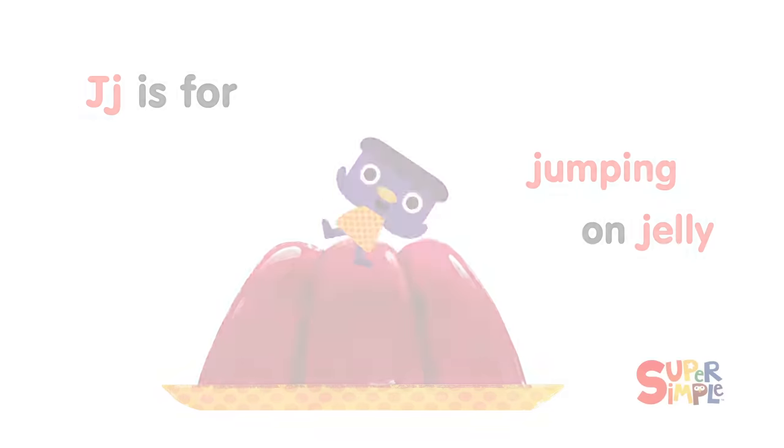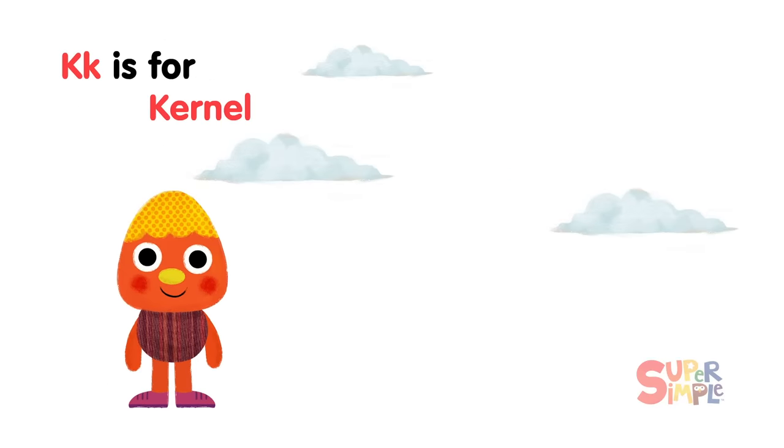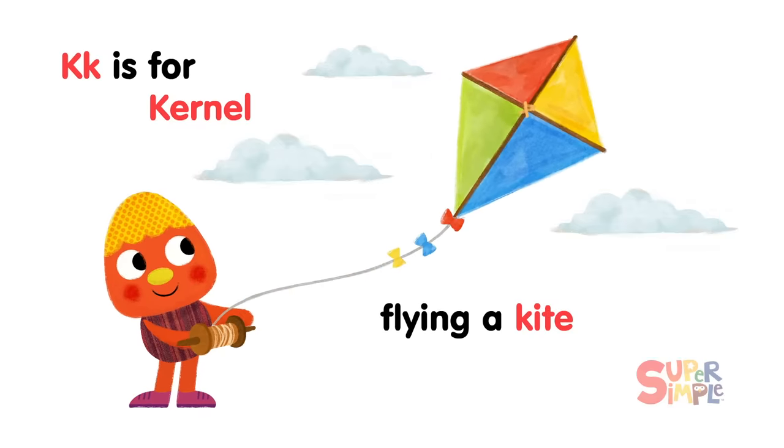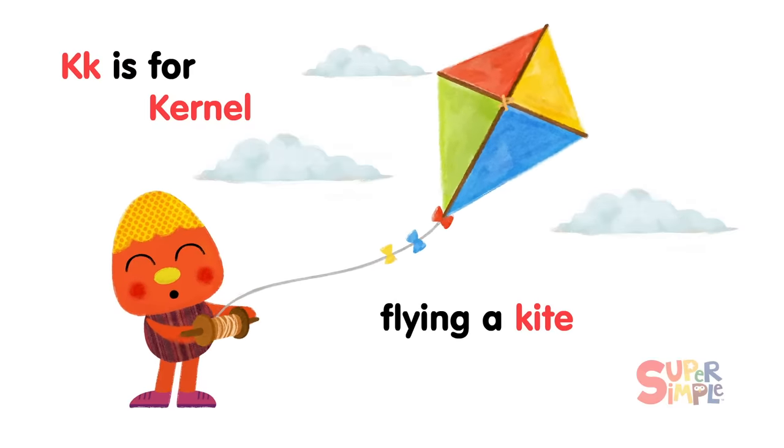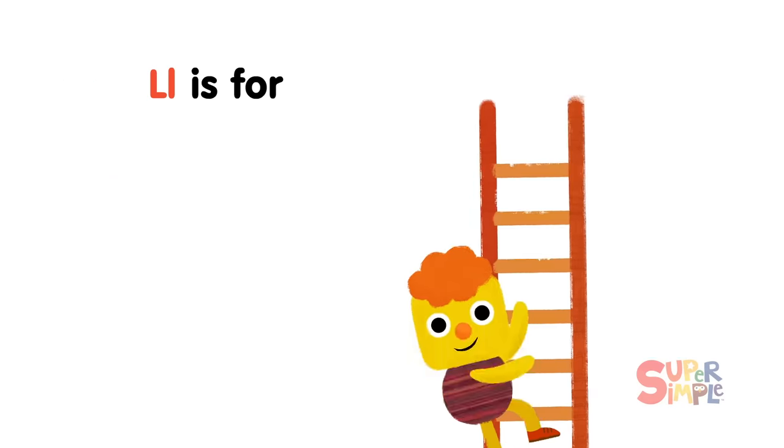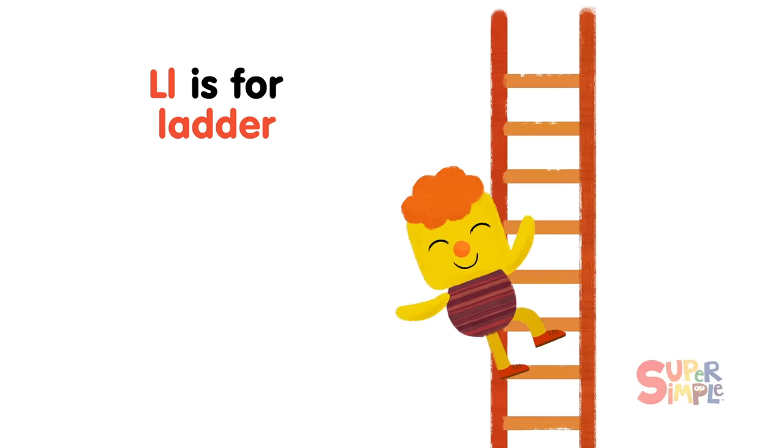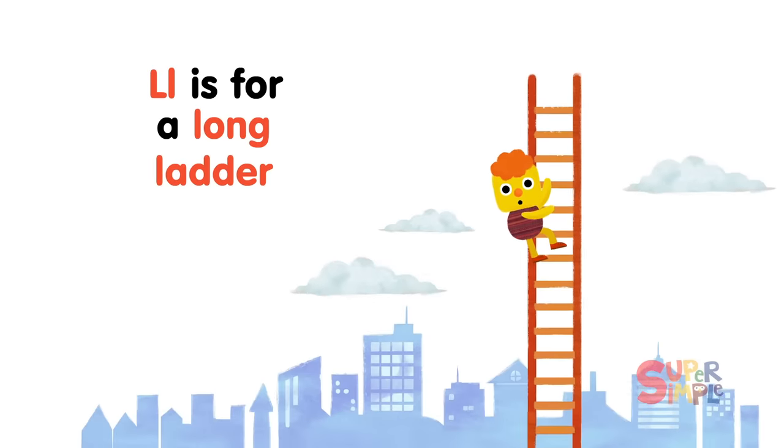K is for Colonel Flying a Kite. L is for Ladder, a long ladder.